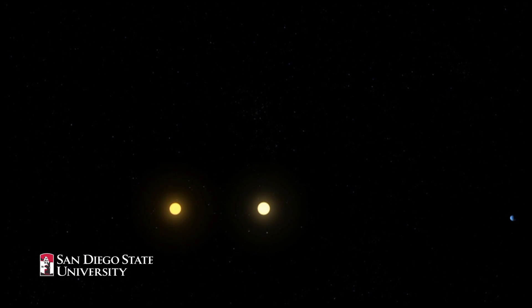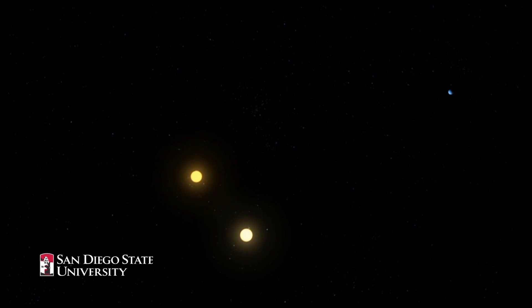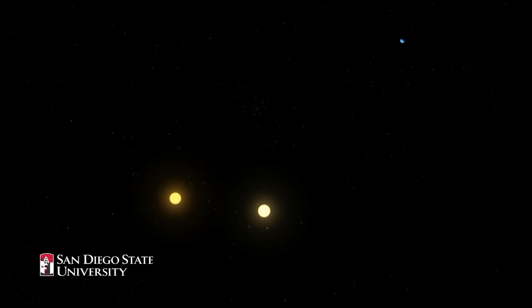When the stars are close to each other, they move faster. And when they're further apart, they move slower in accordance with Kepler's famous laws of motion.